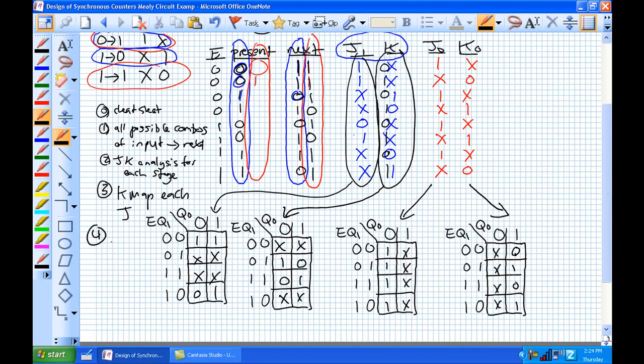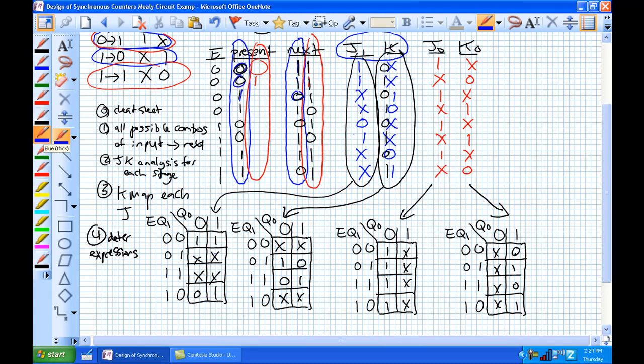And now we're at step 4, determine expressions for each J and K. And how you do that is just perform an analysis. I'm going to grab that big group of 4, this group of 4. I don't need to worry about this X right here, because it's a don't care. Let's see, I'm going to grab that one. That one.